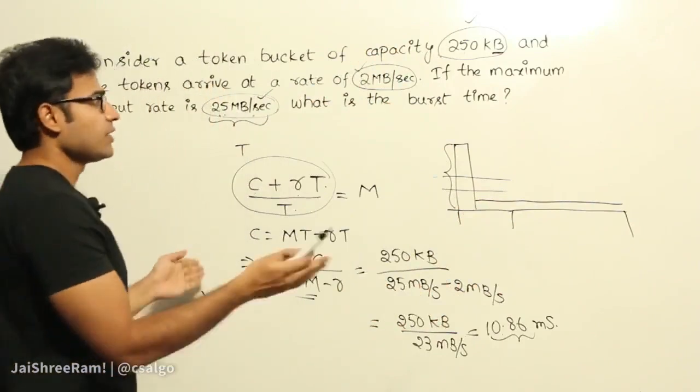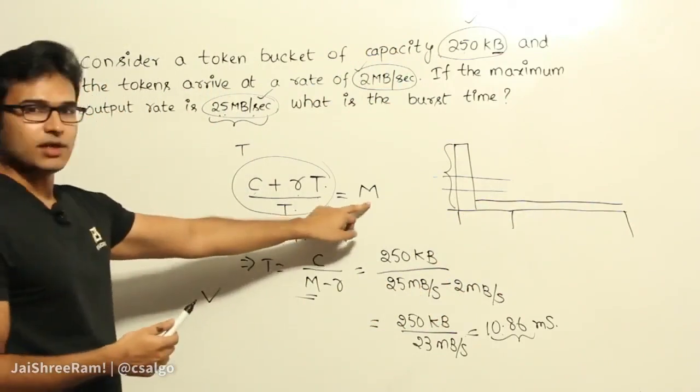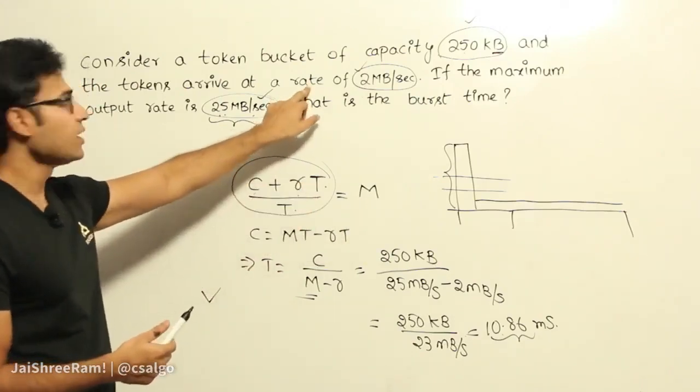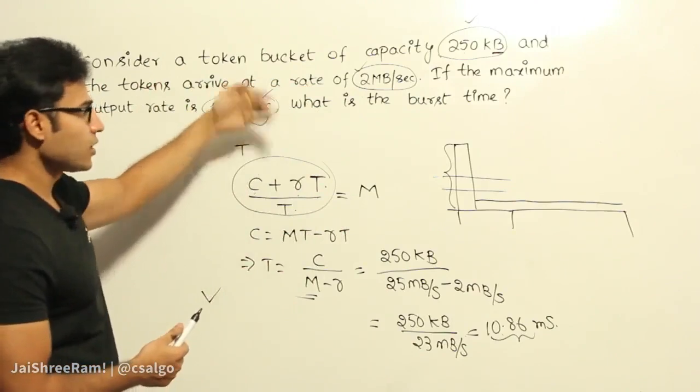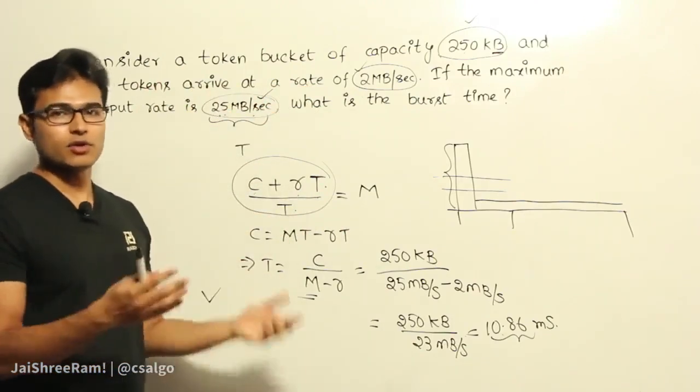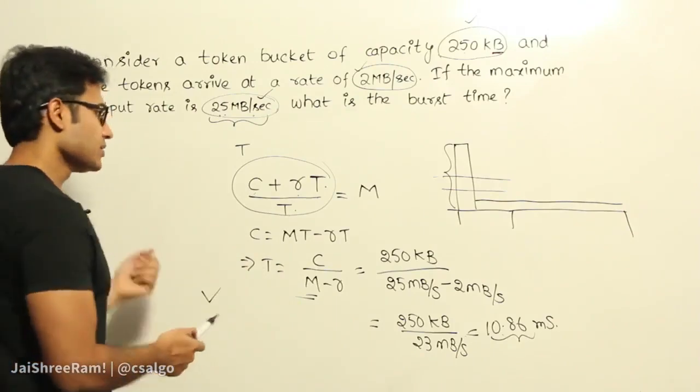So as we increase the time, what happens is the maximum rate will touch the rate of the tokens. Which means whatever rate at which the tokens are coming in, that is the rate you can maintain at the output. You cannot go beyond it. So why? You can see this.